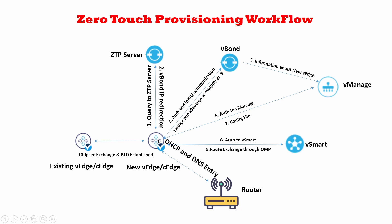Users must upload the vEdge serial number into vBond, which can be done in two ways: manually for a small number of devices, or via a CSV file for bulk vEdge deployments. The CSV file contains the serial numbers of all vEdges and is uploaded into vBond. vBond validates its database to confirm the vEdge belongs to the environment, then validates the certificate and serial number to complete the initial security check.